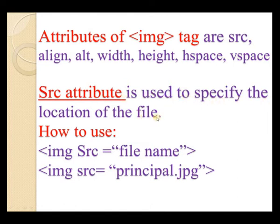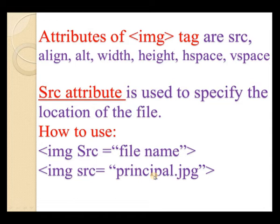The src attribute is used to specify the location of the file. How to use it: img src equal to filename. For example, img src is equal to principle.jpg — this will insert the file named principle.jpg into the web page. You can also insert a gif file the same way.